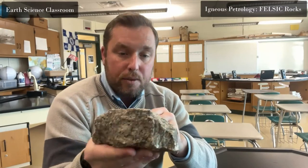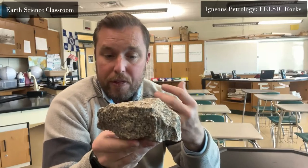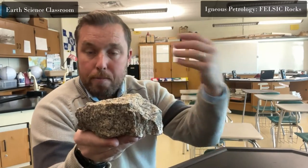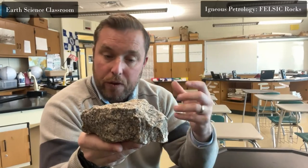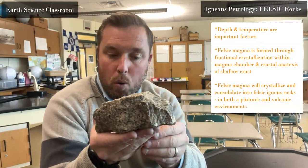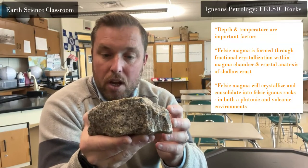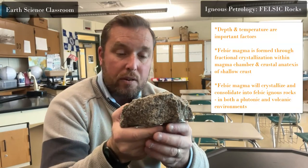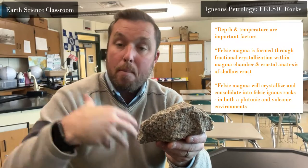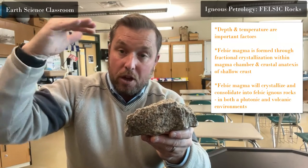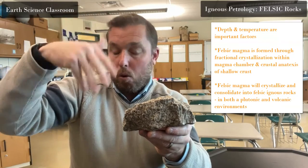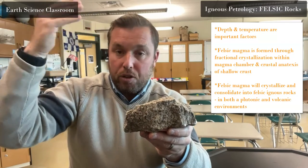Felsic rock forms toward the upper mantle and the crust lithosphere, closer to the surface, because of the addition of quartz, silicon, and oxygen to the composition. According to Bowen's reaction series, these minerals crystallize at cooler temperatures, meaning the magma is higher up and closer to the surface compared to the deeper, hotter regions.